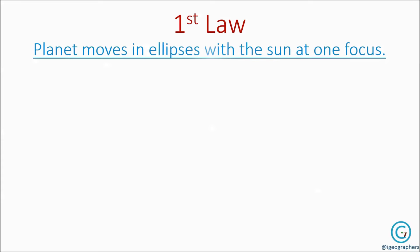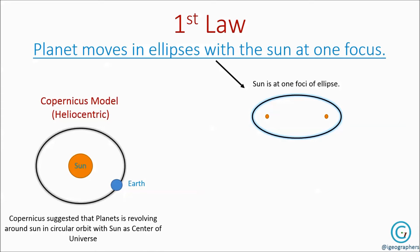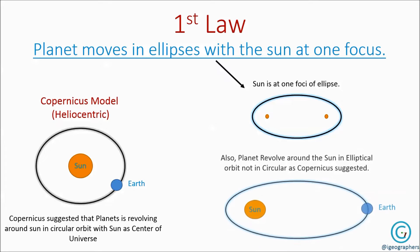So the first law of planetary motion is that planets move in ellipses with the sun at one focus. Kepler suggested that planets are not revolving around the sun in circular orbit as Copernicus suggested in his heliocentric model, but they are revolving around the sun in elliptical orbit with the sun at any one foci of it.